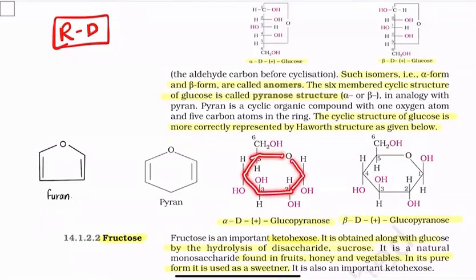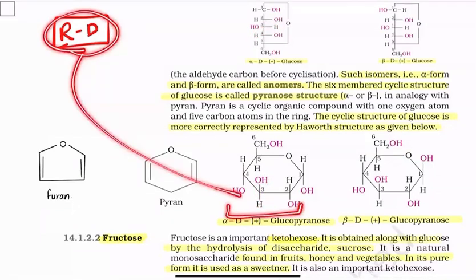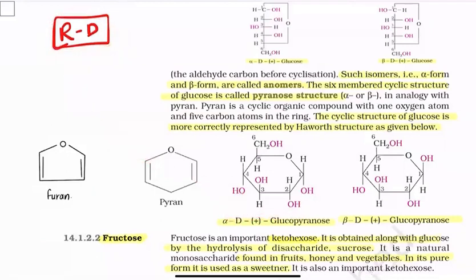In drawing the Haworth projection: for the first carbon, if OH is on the right in the linear structure, it goes down in the Haworth projection, and H goes up. For the second carbon, if OH is on the right, it goes down, and H goes up. For the third carbon, H is on the right so H goes down, and OH goes up. You can practice this using RD Sharma's book.